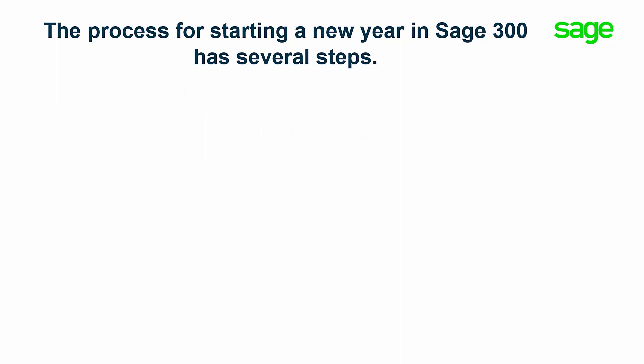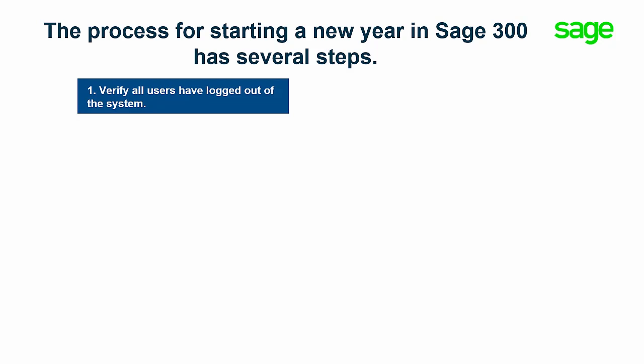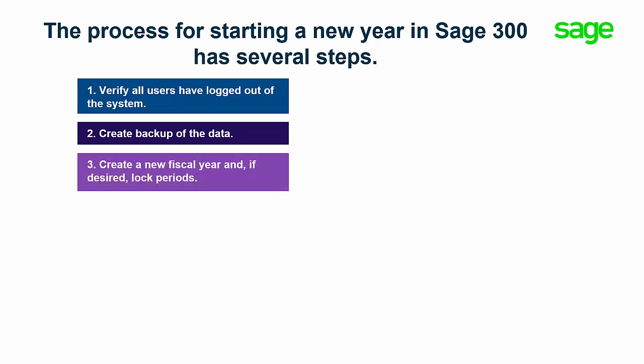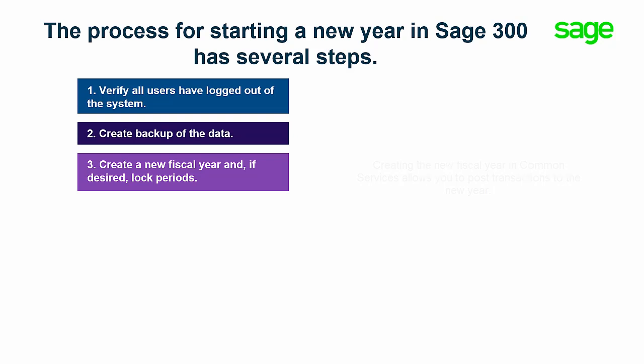The process for starting a new year in Sage 300 has several steps. First, you need to verify all users have logged out of the system and create a backup of the data. Then, in Common Services, create a new fiscal year and, if desired, lock the periods. Creating the new fiscal year in Common Services allows you to post transactions to the new year. After, you should check the data integrity.